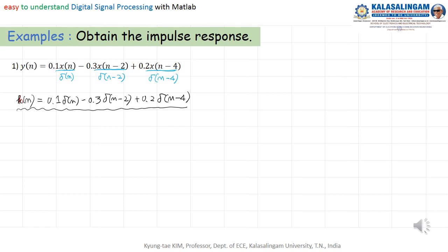We can also represent this graphically. The n-axis has values 0, 1, 2, 3, 4. At n=0, amplitude equals 0.1. At n=2, amplitude equals −0.3. At n=4, amplitude equals 0.2. This is h(n) shown graphically. We can also represent the sequence type: h(n) = {0.1, 0, −0.3, 0, 0.2}. We can show the impulse response using equations, graphs, and sequence notation.